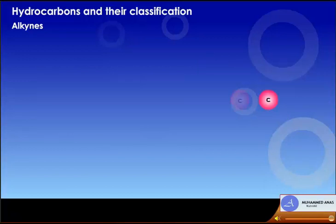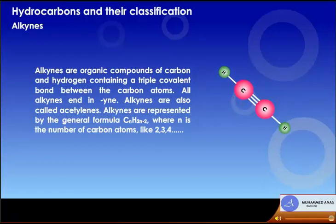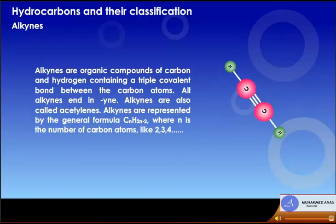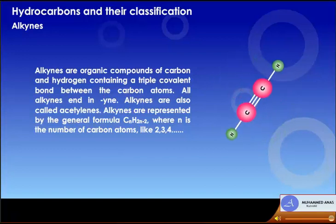Alkynes are organic compounds of carbon and hydrogen containing a triple covalent bond between carbon atoms. All alkynes end in '-yne'. Alkynes are also called acetylenes. They are represented by the general formula CnH2n-2, where n is 2, 3, 4, etc.